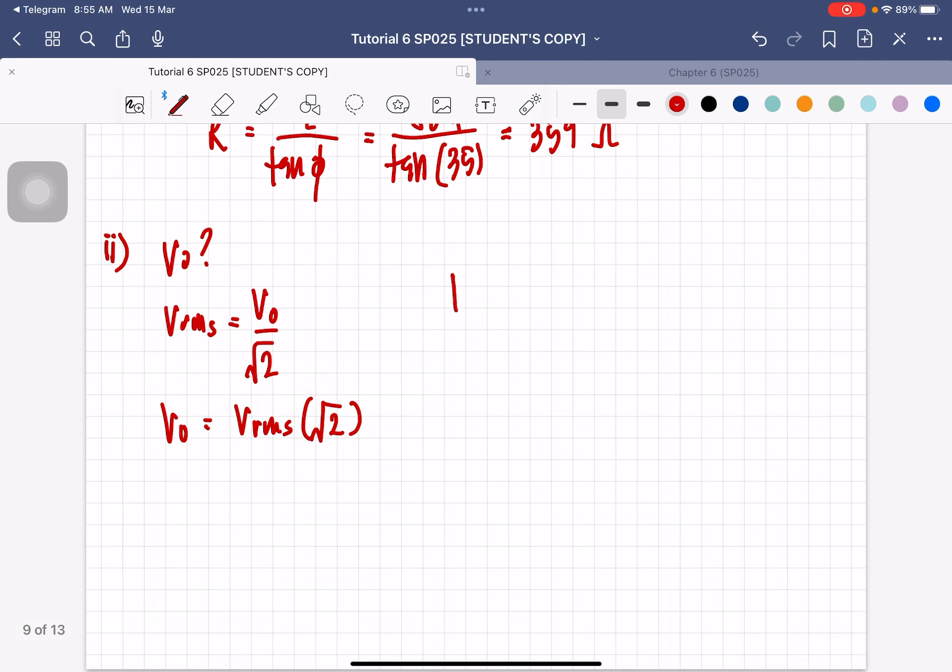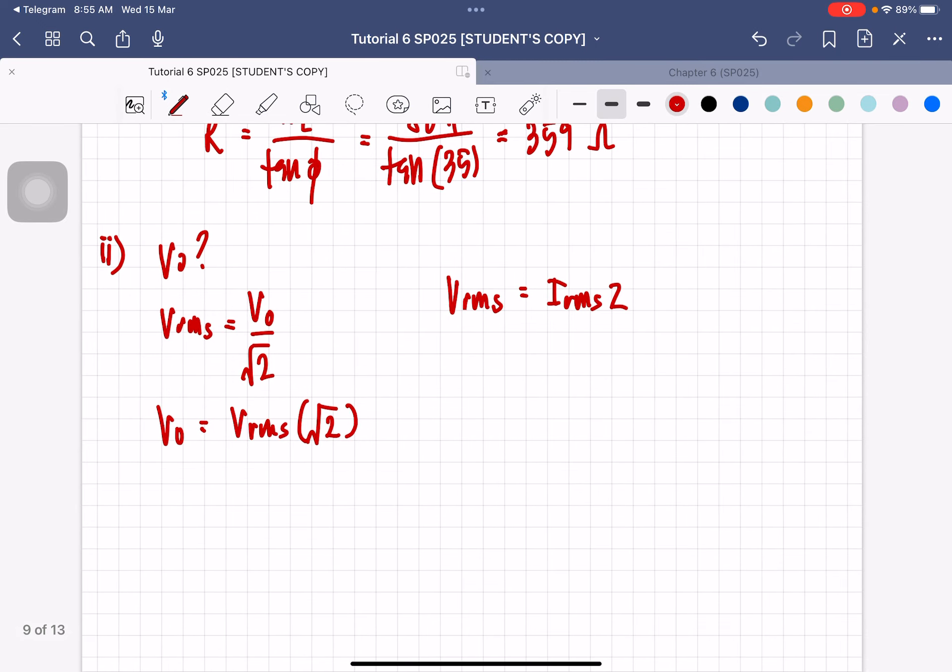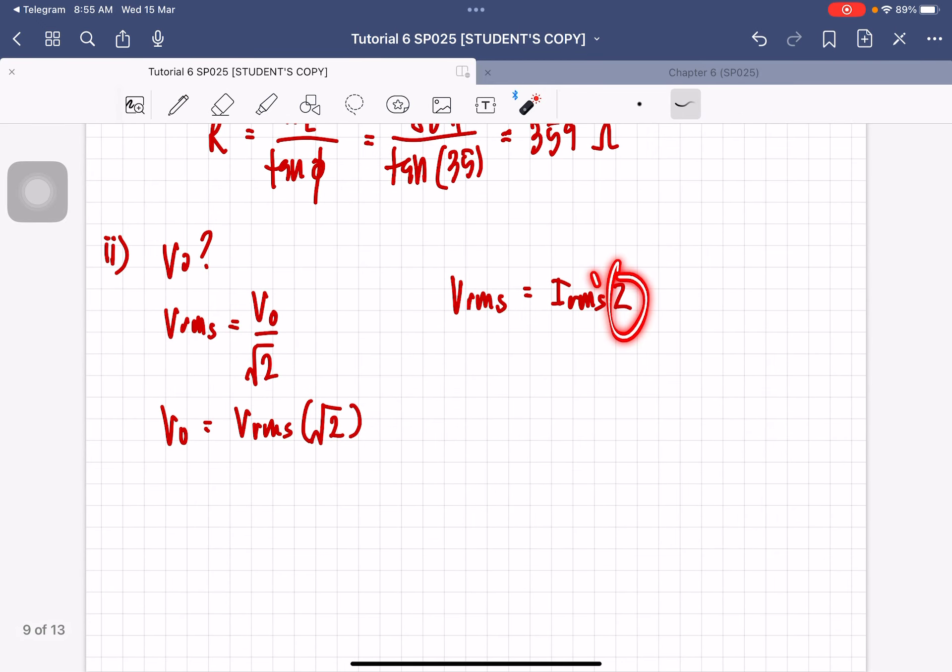So V0 is VRMS times square root 2. So how do we find VRMS? We can find it using IRMS times Z. So do we have the value of Z already? No, we do not have the value of Z, so we have to find the value of Z and then we have to find the value of IRMS.